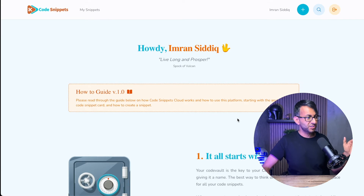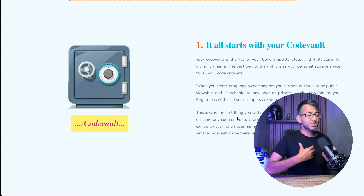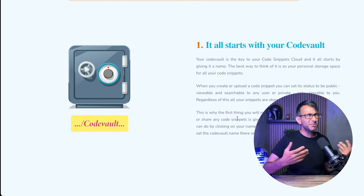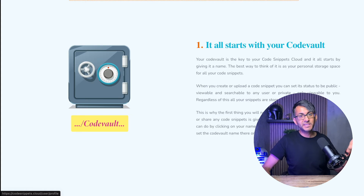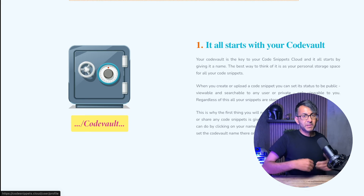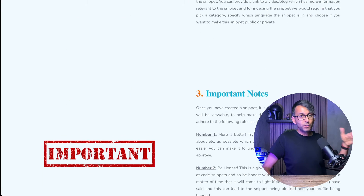There is a how-to-start section with very simple documentation. What it asks you to do is set up a vault. I've set up a vault for myself, and what that means is all of my code will sit in that location — it's almost like setting up a folder for yourself. If you don't do that, your code is going to fall all over the place. It's really easy; all you do is click and give it a name, like your company name — for example, Web Squadron — or something like 'Imran's Favourite Snippets'.